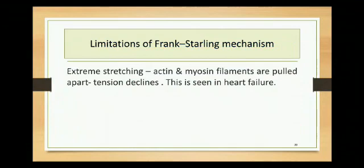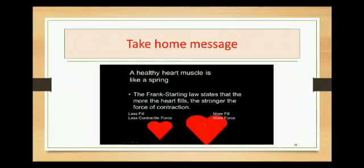Frank-Starling mechanism cannot keep operating at all levels - there has to be some limit, up to certain physiological limits. With extreme stretching of cardiac muscle fibers, the actin and myosin filaments are pulled apart and tension declines completely; this is seen in heart failure. The take-away message: a healthy heart muscle is like a spring. The Frank-Starling law states that the more the heart fills, the stronger will be the force of contraction, up to certain physiological limits and not beyond.